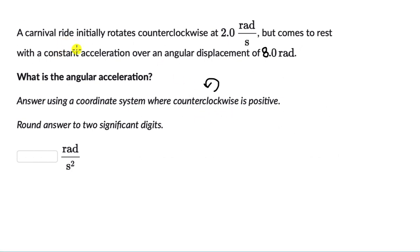Now let's see what is happening. You have a carnival ride, so let's try to represent that with some points, images, lines. So we have this carnival ride and it is initially rotating counterclockwise, but comes to rest with a constant acceleration over an angular displacement of 8 radians.